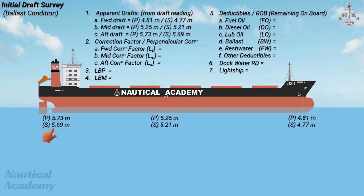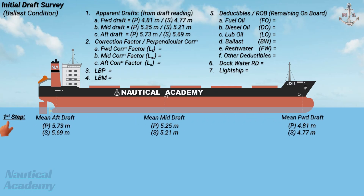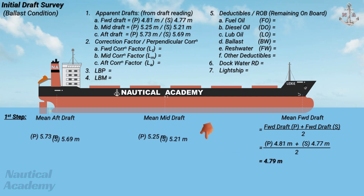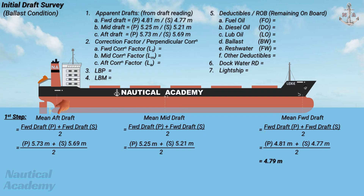In this scenario, these are the observed drafts. The port and starboard drafts differ slightly — the port drafts are greater, indicating the ship is slightly listing to port. Our first step is to determine the mean of forward, midship, and aft drafts. To do this, add the forward port and starboard drafts, then divide by two. The mean forward draft is 4.79 meters. Applying the same procedure for midship and aft drafts, the mean midship draft is 5.23 meters and the mean aft draft is 5.71 meters.